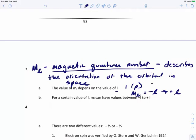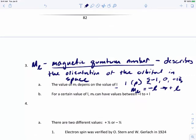M sub L could have values from negative one, zero and positive one. So there's three different versions, three different ways of drawing that P orbital. So for certain values of L, M sub L could have values between negative L to positive L.